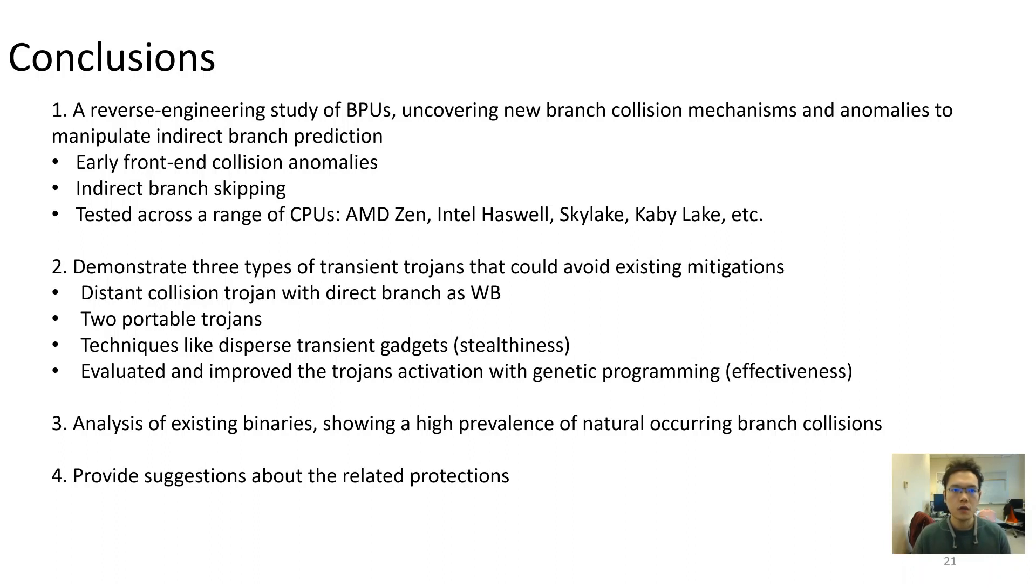To conclude, we performed a reverse engineering study of branch predictors and uncovered different branch collision mechanisms and anomalies. We demonstrated how these findings could be utilized as practical transient trojan attacks. We also proposed techniques to improve both trojan's stealthiness and trojan's effectiveness. In this paper, we also analyzed existing binaries and demonstrated a high prevalence of naturally occurring collisions, which can be used to hide malicious trojans, as well as constructing trojans from existing code. Last but not least, we suggest approaches to defense against these threats.